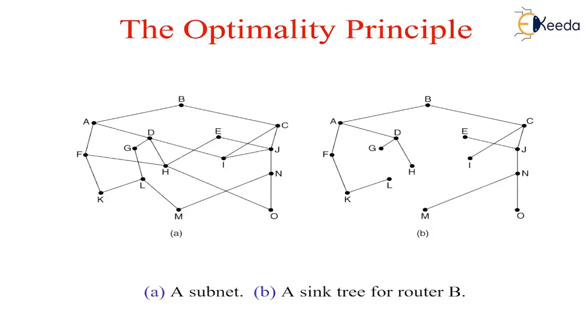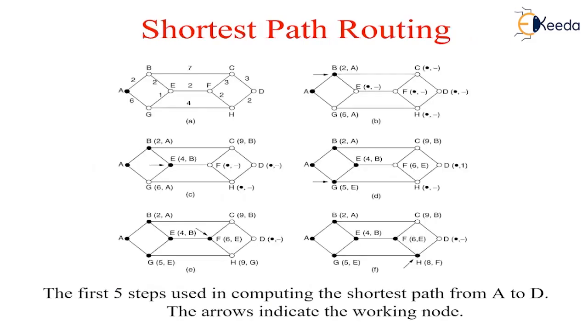Then we will see shortest path routing algorithm. Let us begin our study of feasible routing algorithms with a technique that is widely used in many forms because it is simple and easy to understand. The idea is to build a graph of the subnet with each node of the graph representing a router and each arc of the graph representing a communication line. To choose a route between a given pair of routers, the algorithm just finds the shortest path between them on the graph.